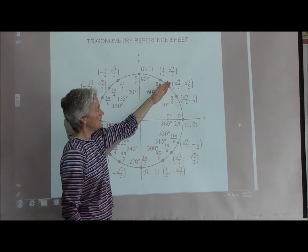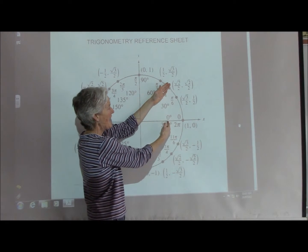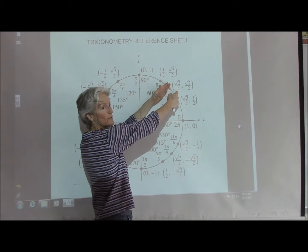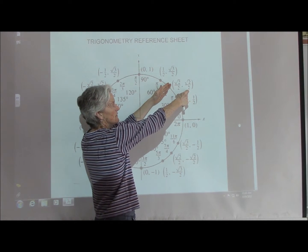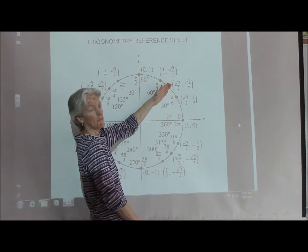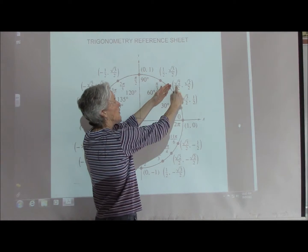See how this is working? I get it. 45 degrees. Cosine is my x over 1, root 2 over 2 over 1. Sine, root 2 over 2 over 1, or root 2 over 2. Tan is y over x.